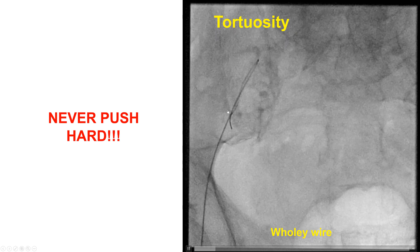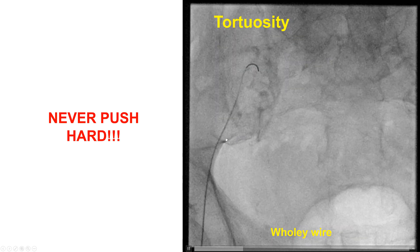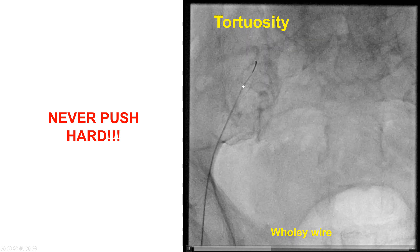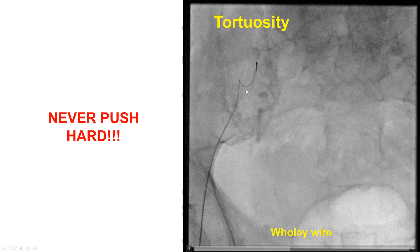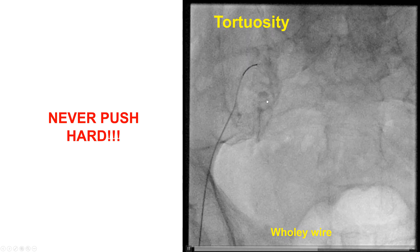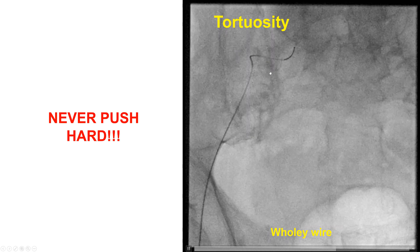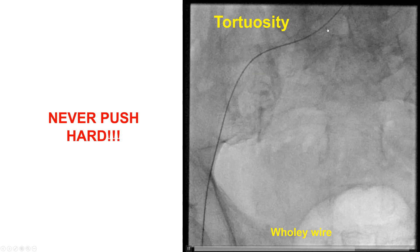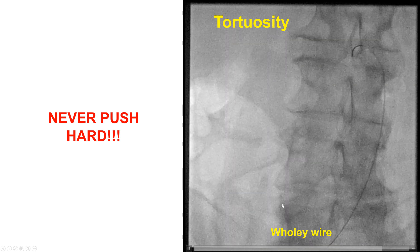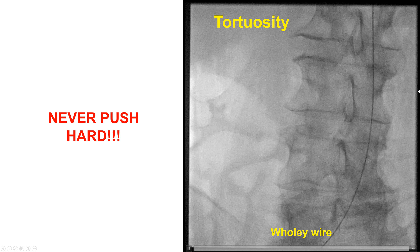This is an example of the Wholey wire advancing through areas of tortuosity. The wire is going into various branches, but there is no hard pushing. The wire is pulled back and redirected, and eventually the wire finds its way. If it does not go through, one would take an angiogram, understand the anatomy, and then advance the wire.